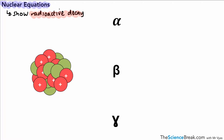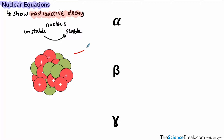Radioactive decay is when we have an unstable nucleus that becomes stable by emitting radiation. We go from an unstable nucleus to a stable one, and it emits one of several kinds of radiation: the first is alpha, the second is beta, another is gamma, and we also have the emission of neutrons from the nucleus, which allows the nucleus to become stable.